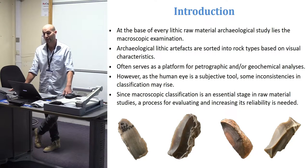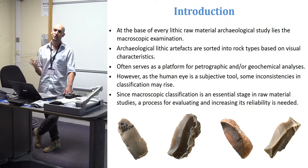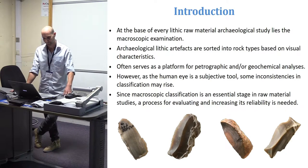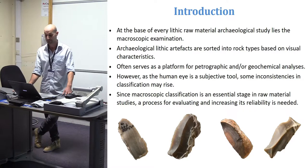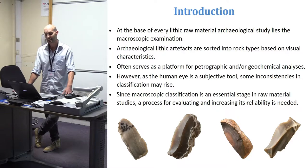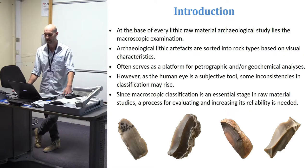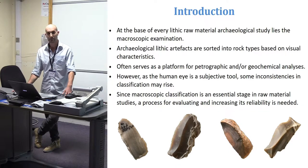At the base of every lithic raw material archaeological study lies the macroscopic analysis, wherein archaeological lithic artifacts are sorted into rock types based on their visual characteristics such as texture, color, fossil presence, and so on. This procedure often serves as a platform for petrographic or geochemical analysis aimed at accurately identifying the sources of these rocks. However, as the human eye is a limited and subjective tool, some inconsistencies in classification may arise.